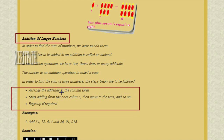Let us recall again the rules for adding larger numbers: arrange the addends in column form; start adding from the ones column; then move to tens and hundreds and so on; regroup if it is required. These are the rules we need to follow when we are adding two large numbers.